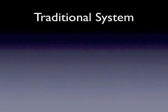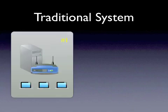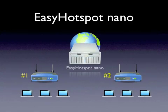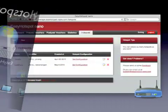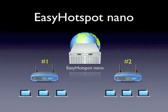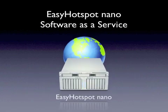In a traditional hotspot system, you'd have to buy and operate a separate server for each of your hotspots. With Easy Hotspot Nano, you don't have to buy or run your own server. The server is already installed and configured for you online. All you have to do is tell your wifi router to communicate with our server. Then you can add as many hotspot locations as you want with ease. That's why we call Easy Hotspot Nano software as a service for your hotspot billing system.